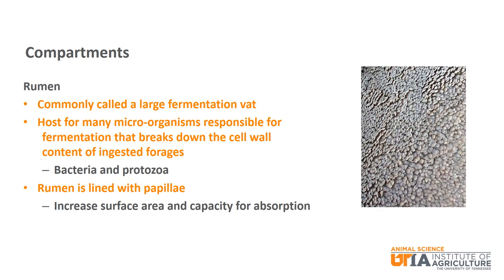The first compartment is probably the most popular: the rumen. It is commonly referred to as a large fermentation vat. It serves as the host for microorganisms, primarily bacteria and protozoa, which are responsible for the fermentation that breaks down cell wall content of ingested forages. The rumen is lined with papillae, which serve to increase the surface area of the tissue and allow for increased capacity for nutrient absorption.